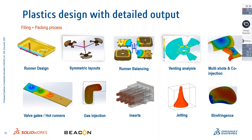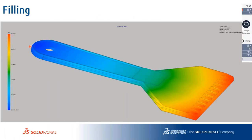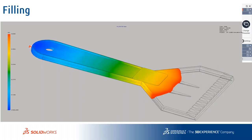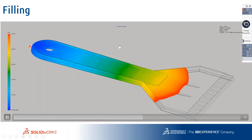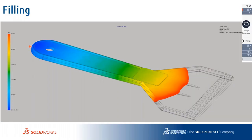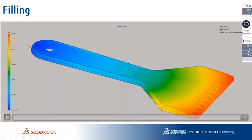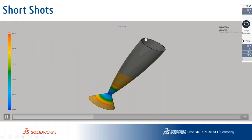Jetting analysis and birefringence are also available. Birefringence shows the movement of fiber inside a plastic part — important when the part needs to be transparent, ensuring material movement doesn't reduce transparency. For filling analysis, you can see the flow animation with element type, node count, material and product information, and the time taken to fill the part. A graph is shown on the left and the animation on screen.